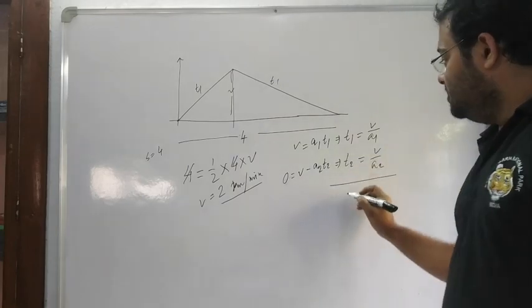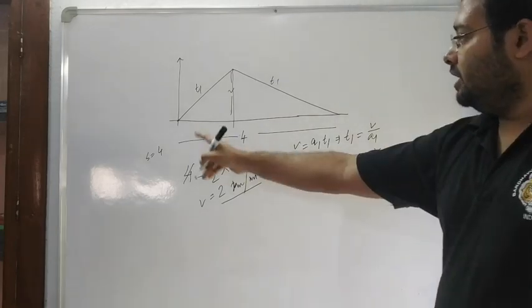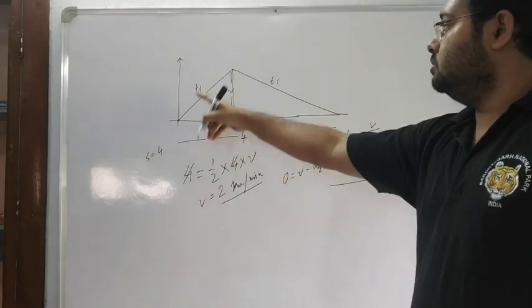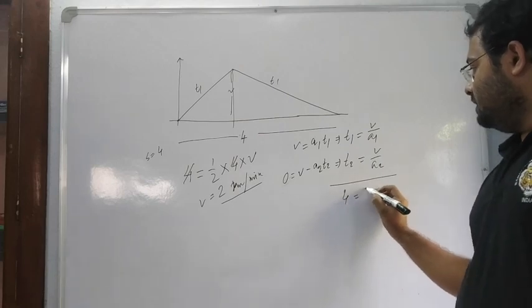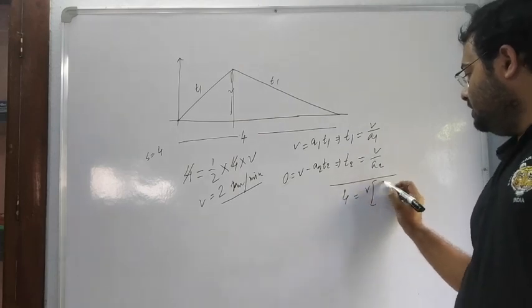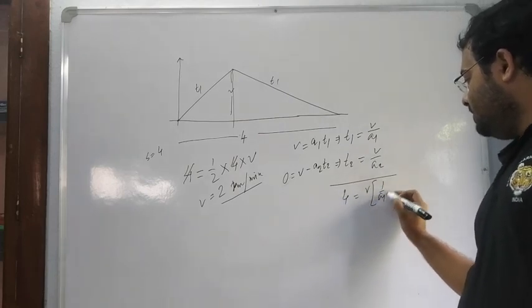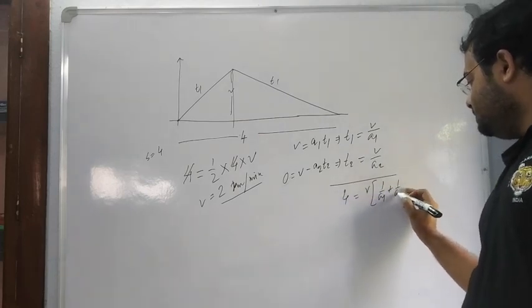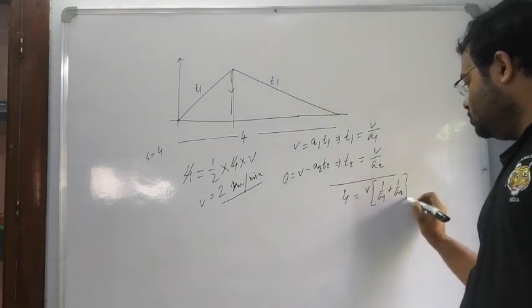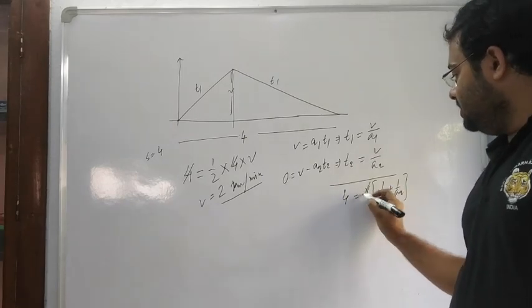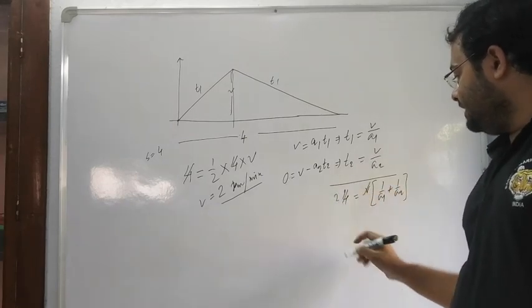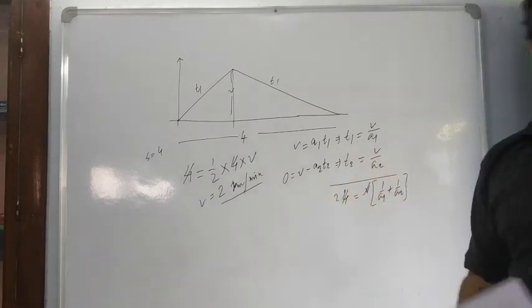t1 plus t2 total time equals 4, so 4 equals v times 1 by a1 plus 1 by a2. With v equal to 2, we get 1 by a1 plus 1 by a2 equals 2, and you are done.